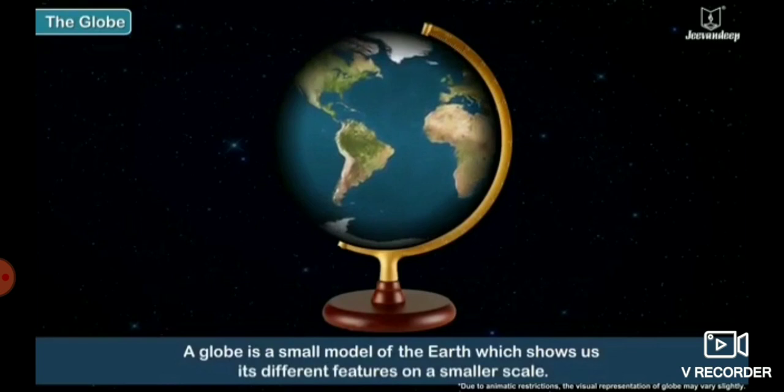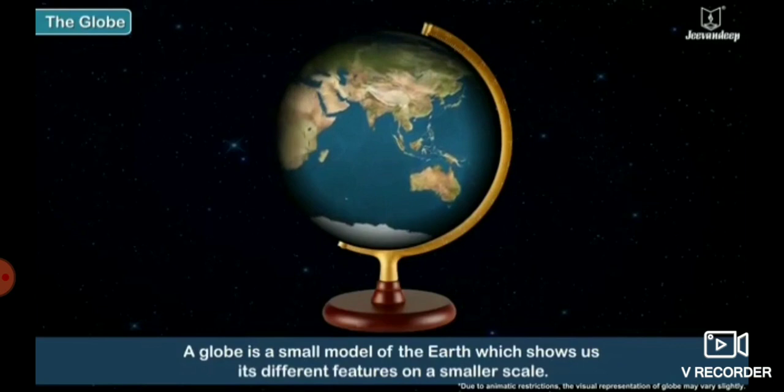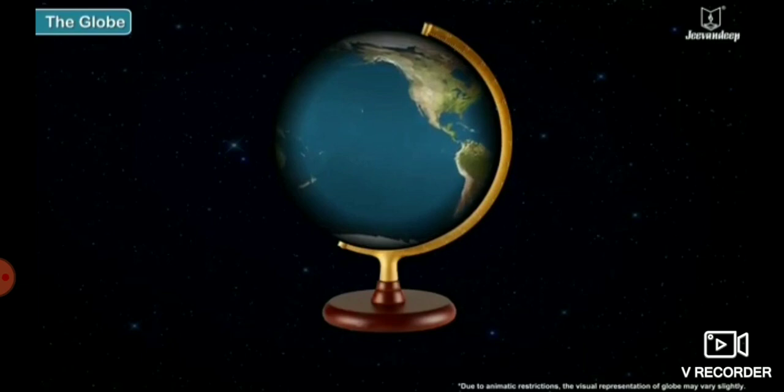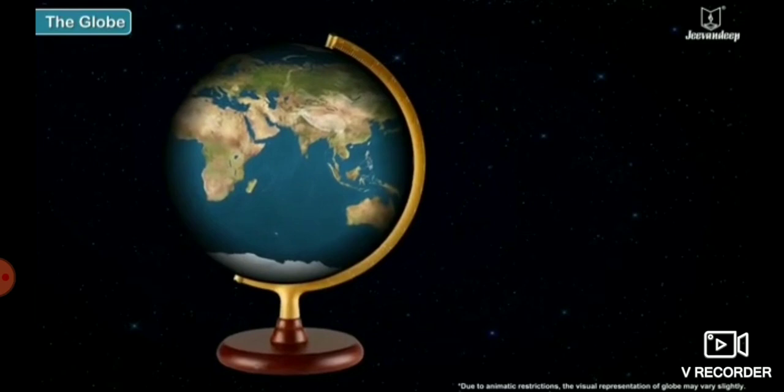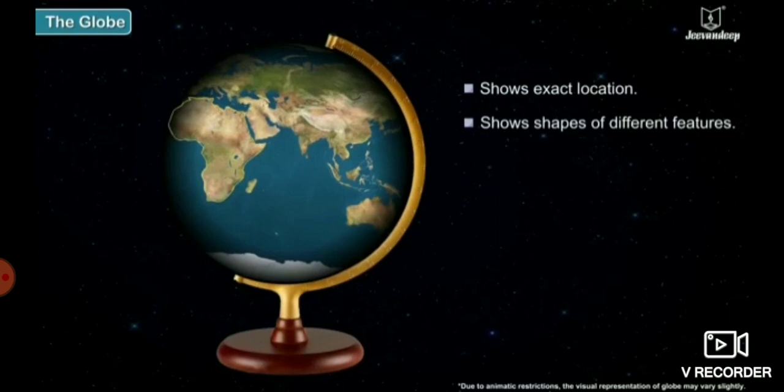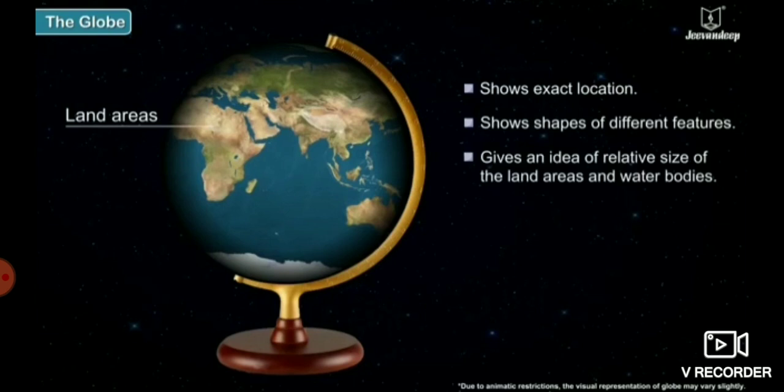A globe is a small model of the earth which shows us its different features on a smaller scale. A globe shows the exact location, shapes and gives an idea about the relative size of all the land areas as well as water bodies on the earth.